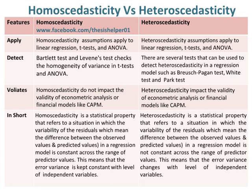In short, homoscedasticity is a statistical property that refers to a situation in which the variability of the residuals — meaning the difference between the observed values and predicted values — in a regression model is constant across the range of predictor values. This means that the error variance is kept constant with the level of independent variables.